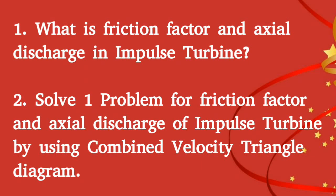My first question is: what is friction factor and axial discharge in an impulse turbine? Second question: solve one problem for the friction factor and axial discharge in an impulse turbine by using a combined velocity triangle diagram.